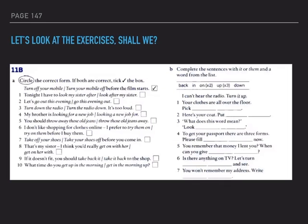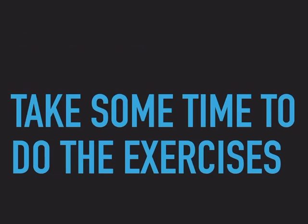Now let's look at the exercises on page 147. Letter A: circle the correct form — if both are correct, tick the box. Example: turn off your mobile / turn your mobile off before the film starts — both are correct because turn off is separable. Letter B: complete the sentences with 'it' or 'them' and a word from the list — back, in, on, up or down. Example: I can't hear the radio — turn it up. Now take some time to do the exercises. Pause the video because when we continue, we'll be correcting.